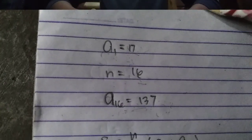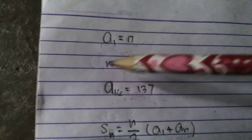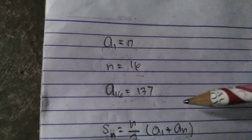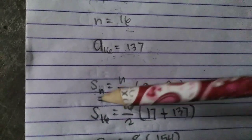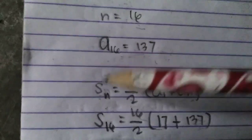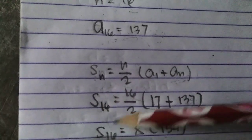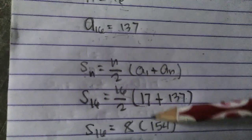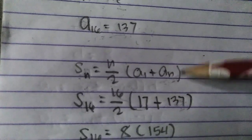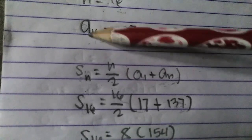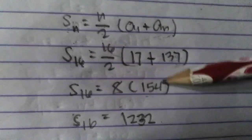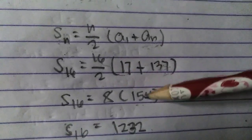For the arithmetic series, the first step is we need a sub n, which has been solved already, as well as n and a sub 1. Our a sub 1 is 17, n is 16, and a sub 16 equals 137. We substitute into the formula: S sub n equals n over 2 multiplied by a sub 1 plus a sub n. So n is 16, a sub 1 is 17, and a sub n is 137. Solving: 17 plus 137 is 154, and 154 multiplied by 8 is 1,232.